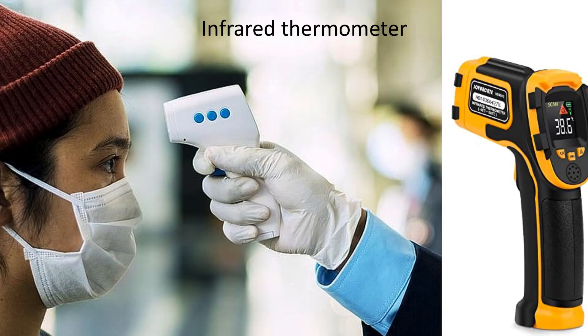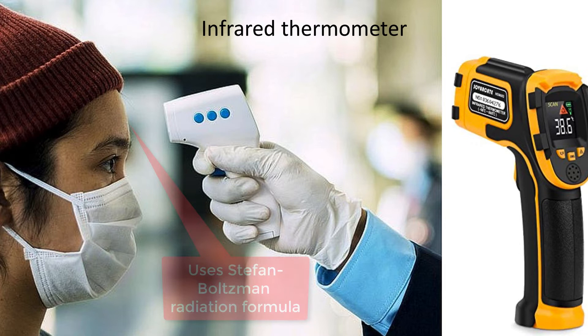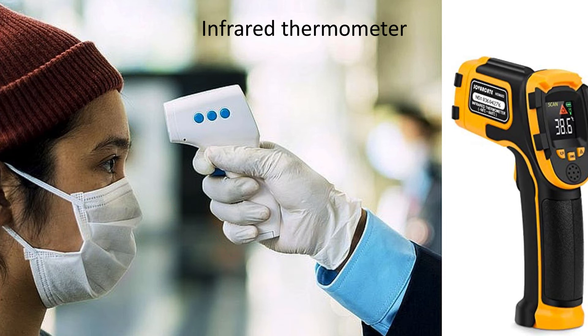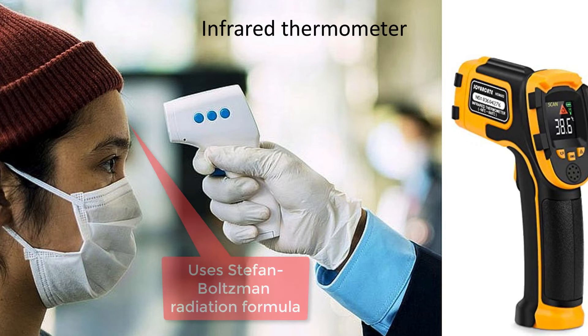This is called the Stefan-Boltzmann law that we'll come to later. Here the amount of heat radiated from a person's skin is captured by sensors that look at a particular range of frequencies and estimate the temperature of the skin.